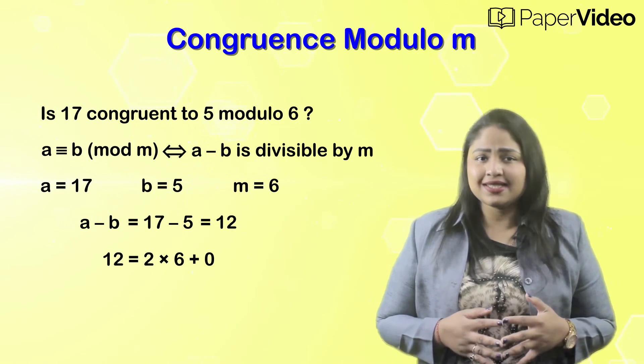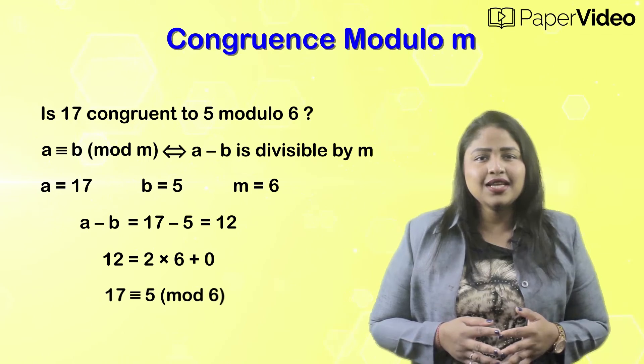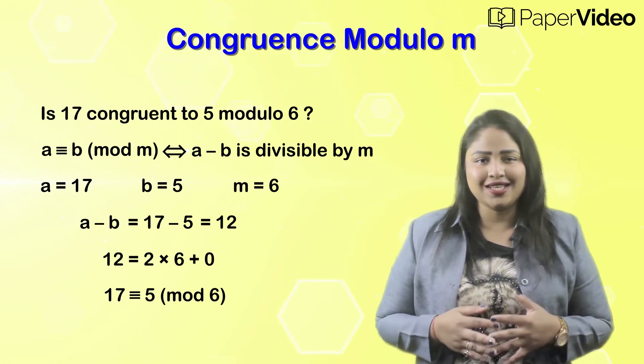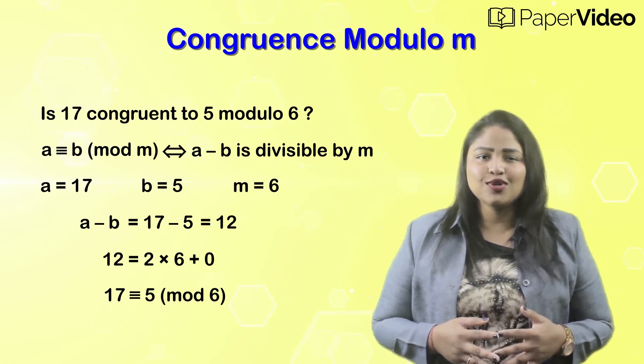We know that 12 is divisible by 6. Therefore, 17 is congruent to 5 modulo 6. This is the concept of congruence modulo M.